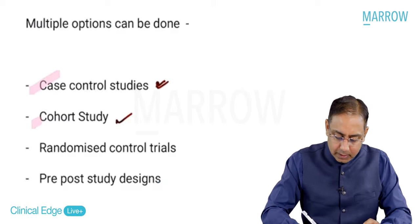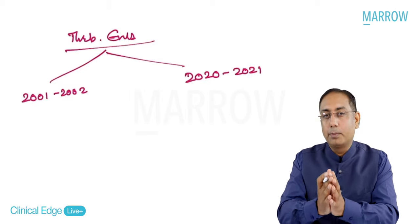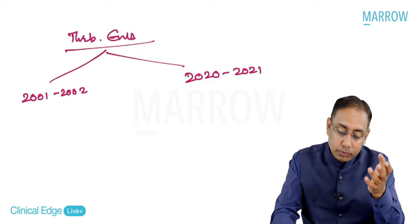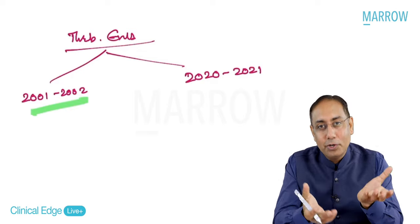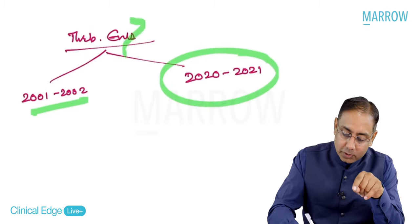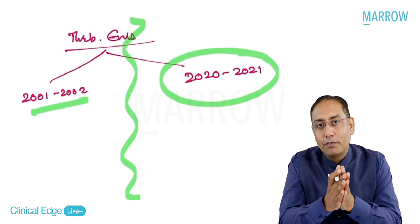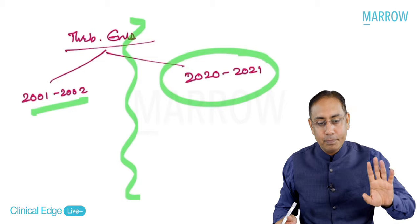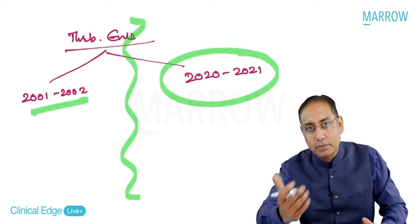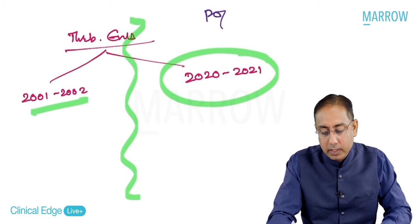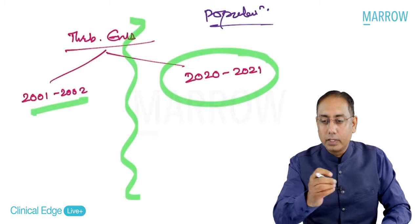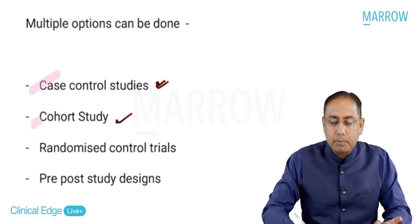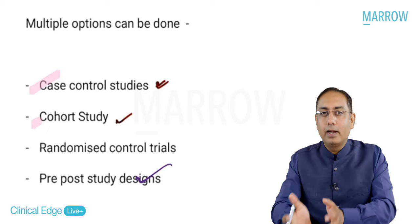Another type is pre-post study design. For example, looking at thromboembolic phenomena - see how many people had thromboembolism in 2001-2002 when there was no COVID-19 and no vaccines, and compare that with 2020-2021. Before the vaccine was introduced versus after the vaccine, in the same population - take any country like India, Italy, or France, and see thromboembolism rates before and after the vaccine. That is a typical pre-post study design.